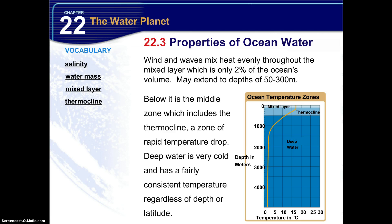Below the mixed layer is the middle zone, which includes the thermocline — a zone of rapid temperature drop. Then there's deep water, which is very cold and has a fairly consistent temperature regardless of depth or latitude. So the farther you go down into the deep water, the temperature really doesn't change all that much.